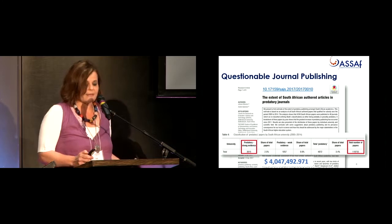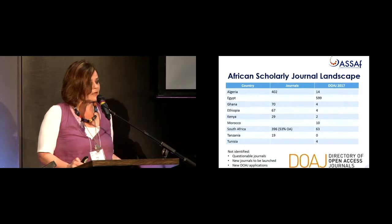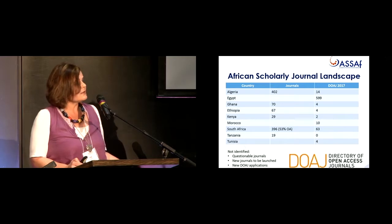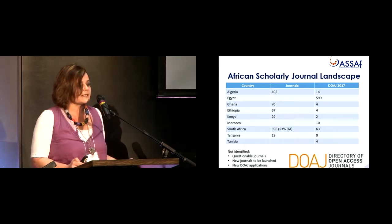If we multiply by 18,000 South African Rand — the amount a researcher receives for publishing in an accredited journal — that means 3,015 potentially predatory journal articles at a cost of 18,000 Rand results in over 4 million US dollars of taxpayers' money allocated to institutions going to questionable publications. Something is terribly wrong with this awarding system.